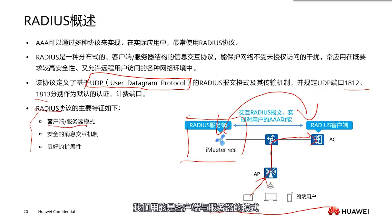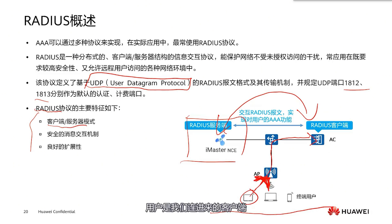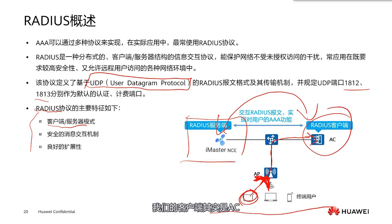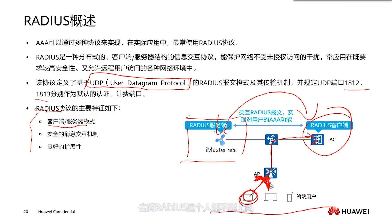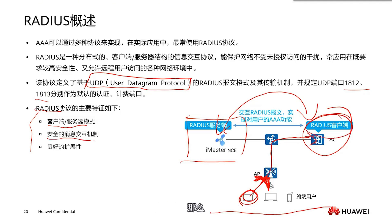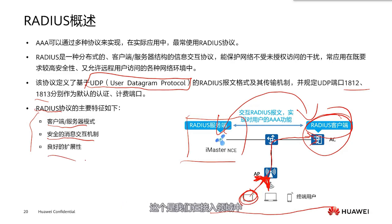The RADIUS protocol uses a client-server model. The user is the connecting client nominally, but in reality for the RADIUS protocol, our client is actually the AC. This is because it is the AC that receives the user's message and asks RADIUS if this person can access the internet. So from the perspective of RADIUS, our AC is the client. RADIUS also supports secure messaging, interaction mechanisms, and good scalability, making it a very important protocol in the access domain.